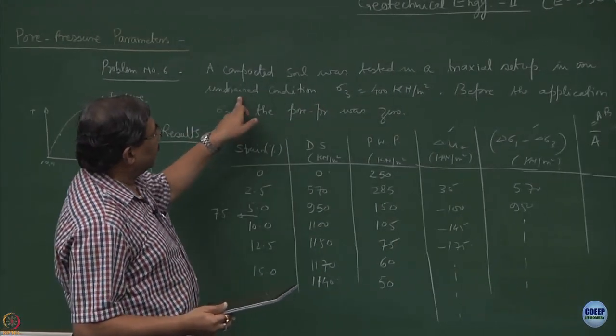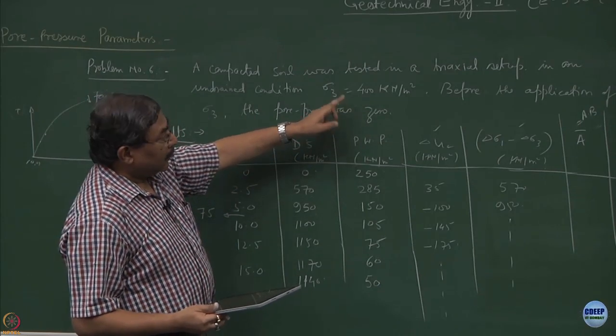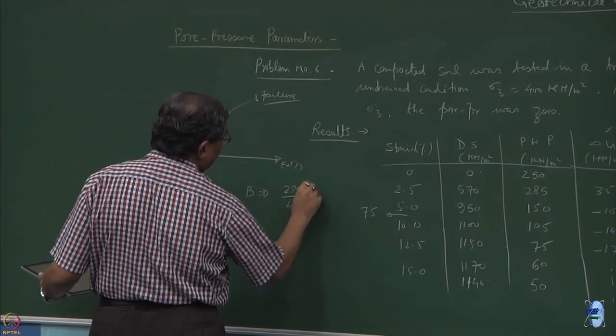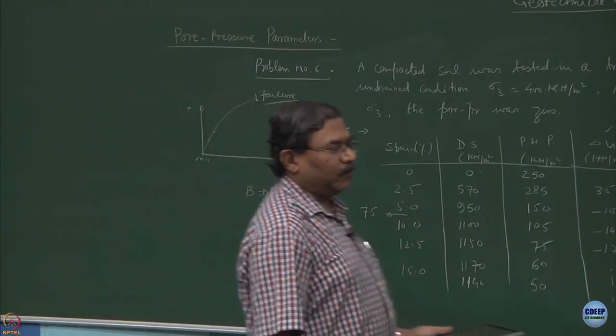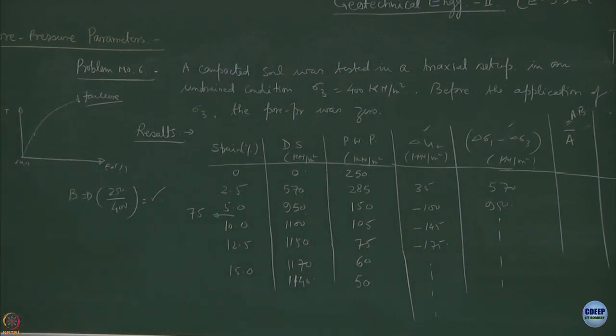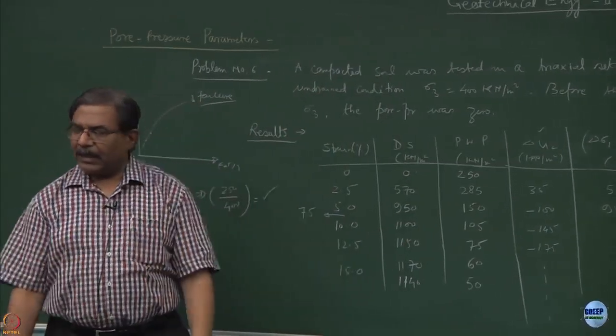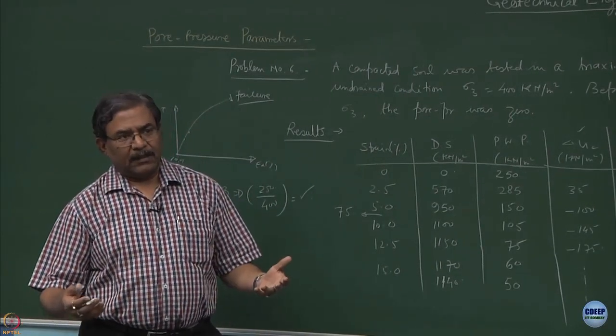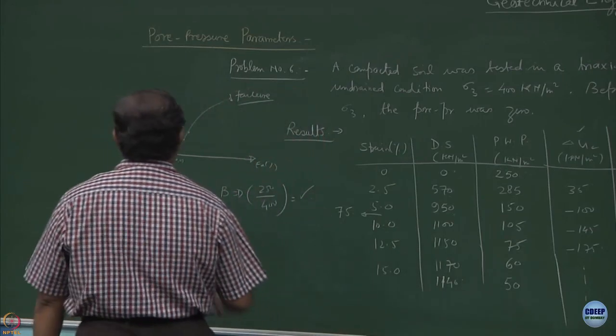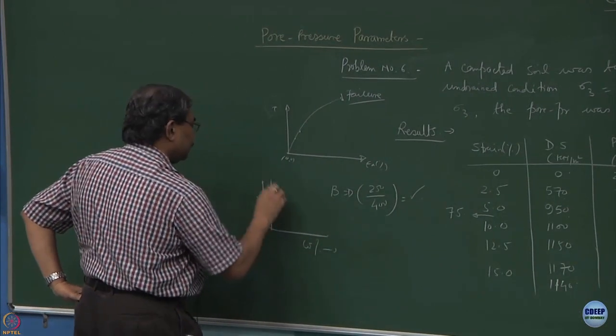A compacted soil was tested in a triaxial setup in undrained condition at sigma 3 equal to 400. Before the application of sigma 3, the pore water pressure was 0. The incremental change in the pore water pressure happens to be 250. So, that means, I can obtain B as, how do you characterize the soil? This is the first characterization of the soil, unsaturated sample. And that is correct because you are working on compacted soils. So that is what our hunch was. So, the way you started analyzing the problem is that you are dealing with the unsaturated soil sample which has been having suction in it by virtue of being a compacted material.